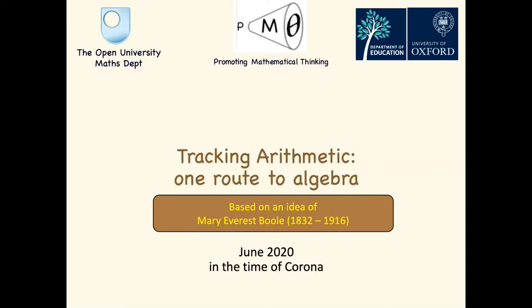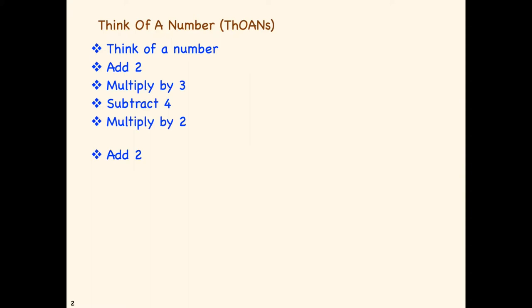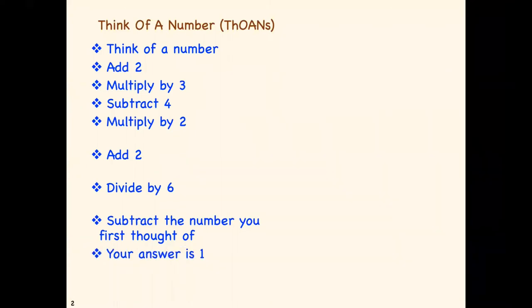The basic idea is as follows. Would you please think of a number? Add two, multiply by three, subtract four, multiply by two, add two, divide by six, subtract the number you first thought of, and I think your answer is one. Not only is your answer one, but so is everyone else's.